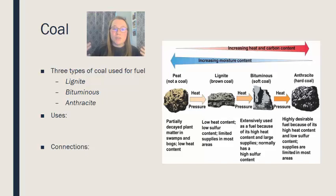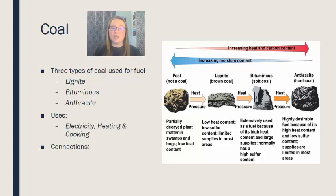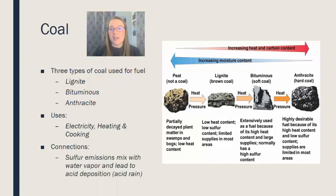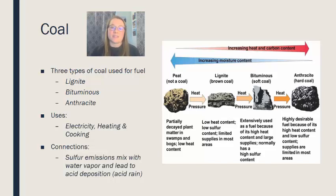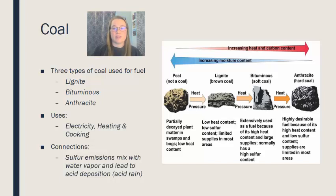The uses of coal include electricity, heating, and cooking. Sulfur emissions from burning coal are associated with acid rain — that sulfur reacts with sunlight and water vapor to produce acid deposition, which leads to a whole range of other environmental issues.